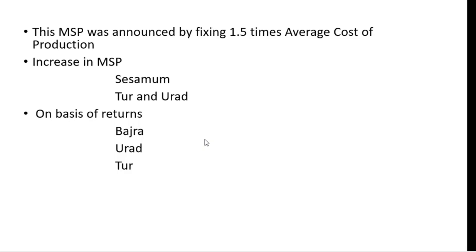In terms of rupee increase in MSP, sesame stands first with an increase of ₹452 per quintal, followed by tur and urad dal with ₹300 per quintal increase. On the basis of returns over cost of production, bajra stands first at 85%, urad dal stands second at 65%, and tur dal stands third at 62%. For the remaining crops, the return to farmers over the cost of production is at least 50%.